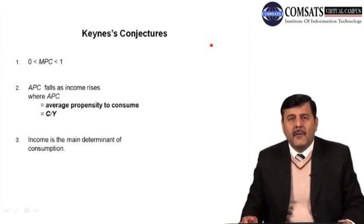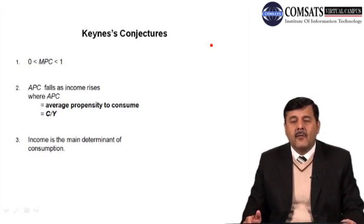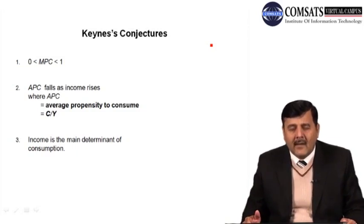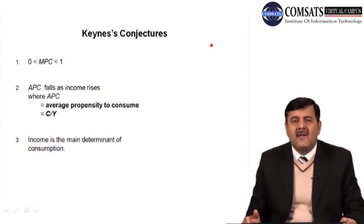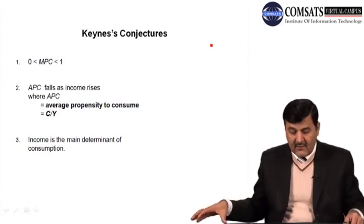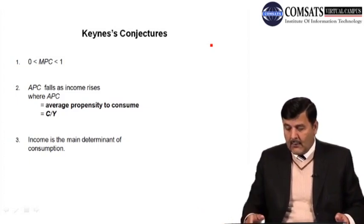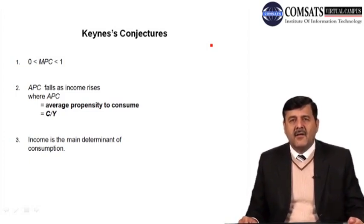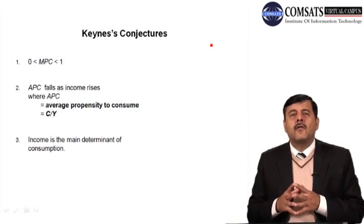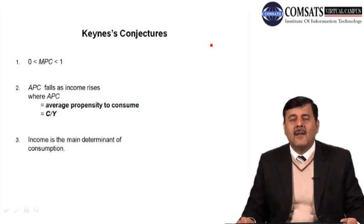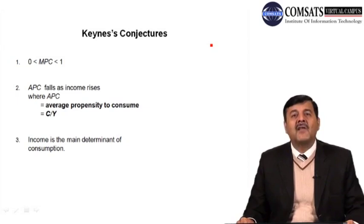Before Keynes' consumption function, there are some Keynes conjectures. According to Keynes' psychological law of consumption, MPC — the marginal propensity to consume — is the change in consumption due to a change in income. Keynes said that MPC is always less than one, meaning whenever income increases, consumption will also increase but by a lesser proportion.